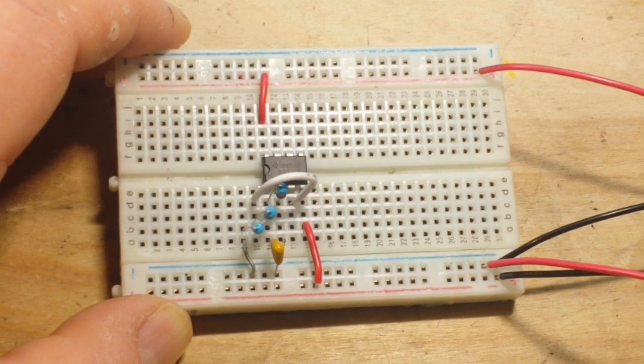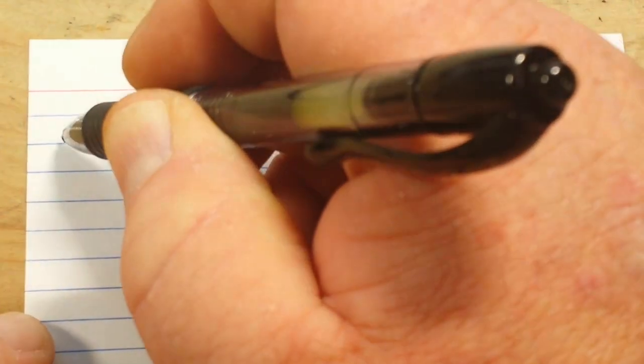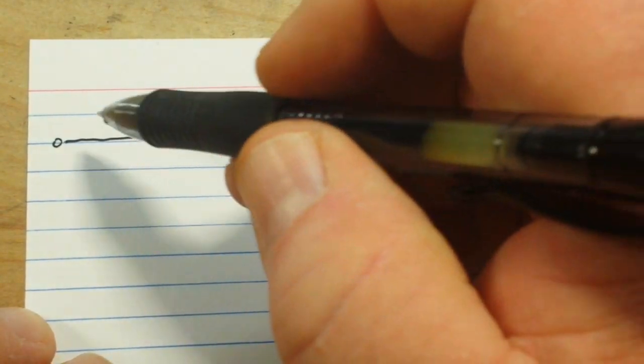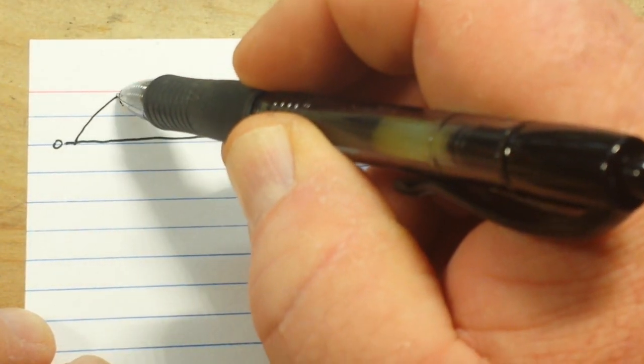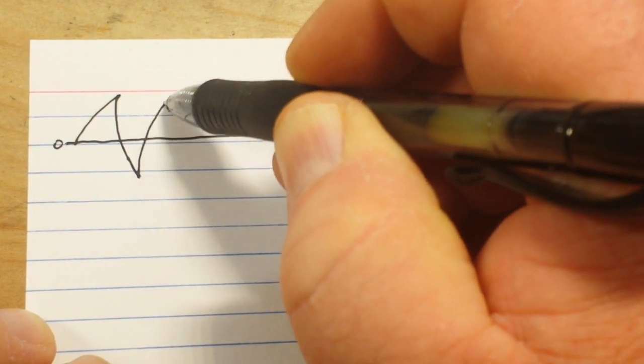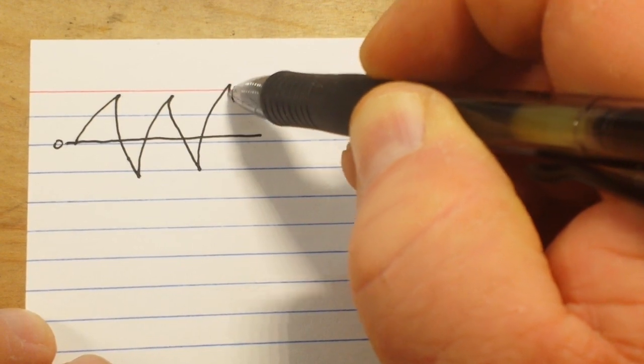Now before we play with the circuit, let me explain a little bit about how it works. We've got resistors and capacitors, therefore we have an RC circuit. And the way that works, of course, we'll say that's our zero volt line. Our capacitor charges, discharges, charges, discharges. You get the idea.